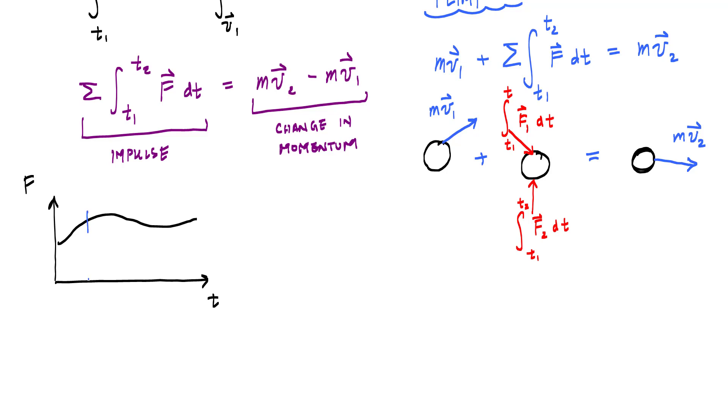And if we're interested in the impulse from, let's say, t1 to t2 right here, basically this area, the magnitude of the impulse would represent the area under the curve right here, t1 to t2, F of t dt.